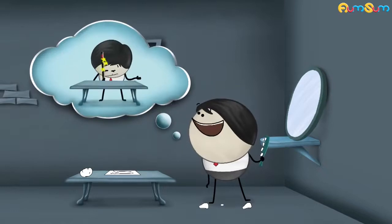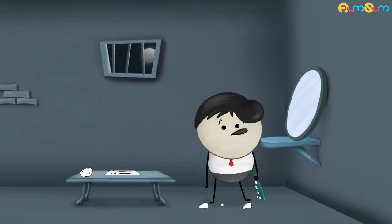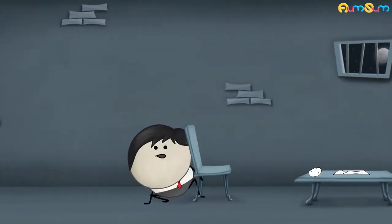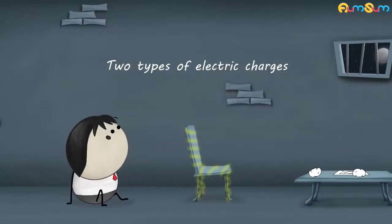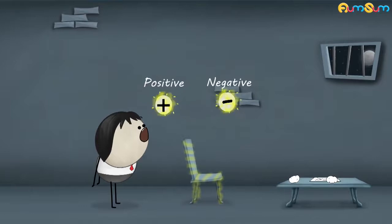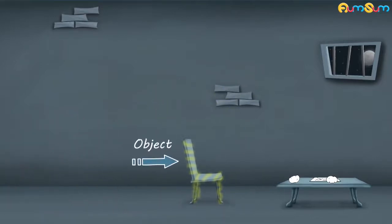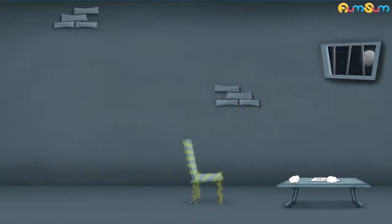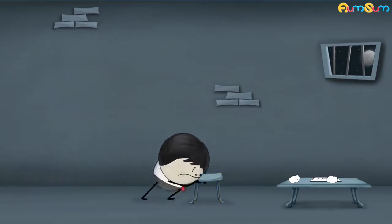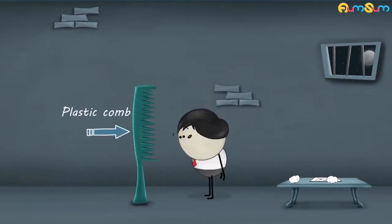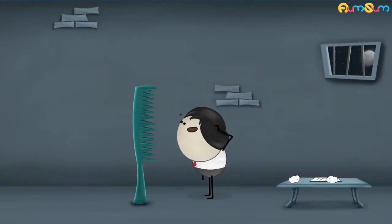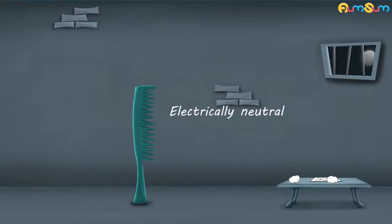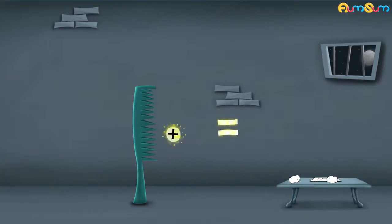Do you think it is magic? No. The reason behind this is electric charge. Electric charge is the quantity of electricity held in an object. There are two types of electric charges: positive and negative. However, there are some objects where the positive and negative charges are equal to one another. In such cases, we say that the object is electrically neutral. So, was the plastic comb initially electrically neutral or electrically charged? Initially, the plastic comb was electrically neutral — that means it had equal number of positive and negative charges.